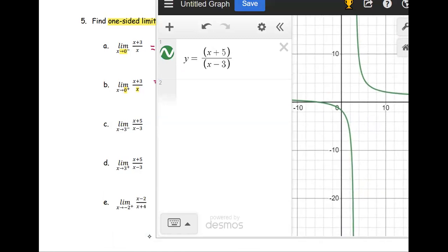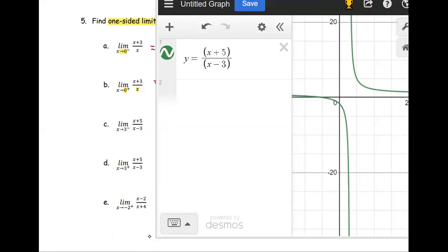It's similar to the graph before. Since x minus 3 is the denominator, we know that x equals 3 is the vertical asymptote.